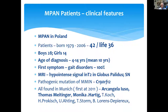First symptoms in all my patients was gait disorders. On MRI imaging, we saw hypointensity in T2 in globus pallidus and substantia nigra. We found the pathogenic mutation C19orf12, first found in Munich at 2011 by Arcangela Yuzo, Thomas Meitinger, Monica Harting, and the team of the Center of Genetic Diagnosis.